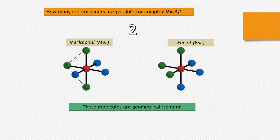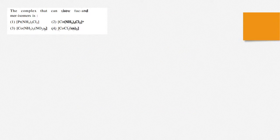So we have these two stereoisomers. Neither of them is optically active, they are not enantiomers — they are geometrical isomers: one is meridional and the other is facial. That's it for this video. If you want to try the question shown, pause the video, look at the question, and comment the answer below. Thank you very much for watching.